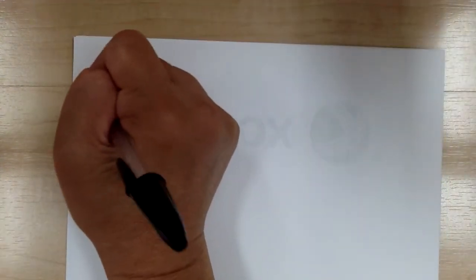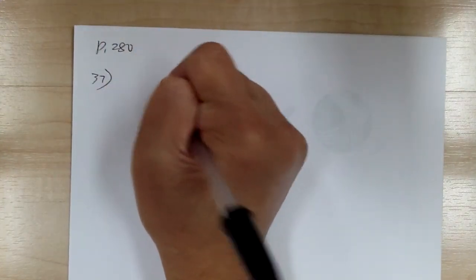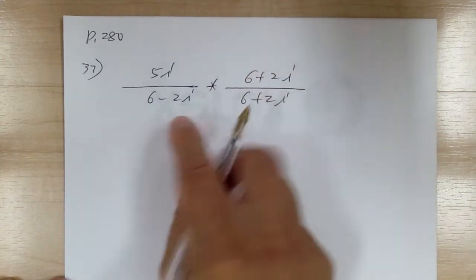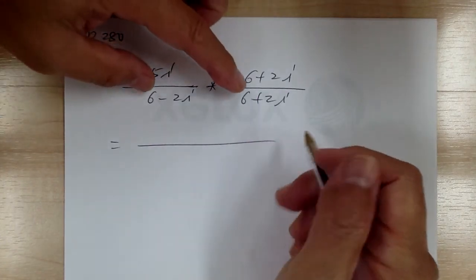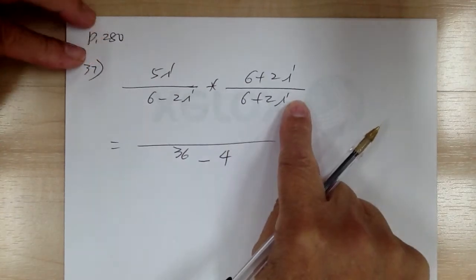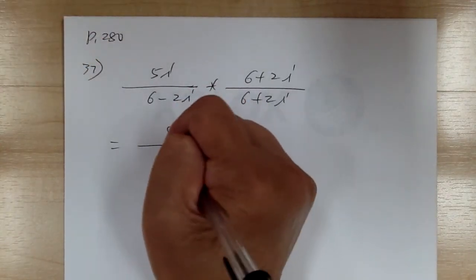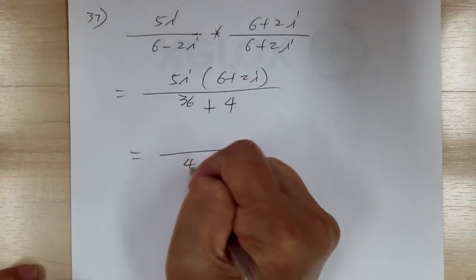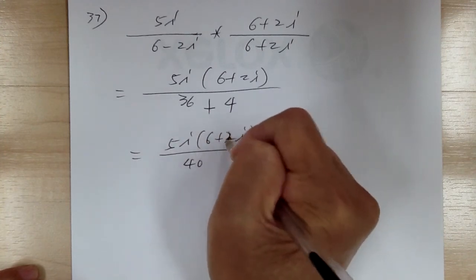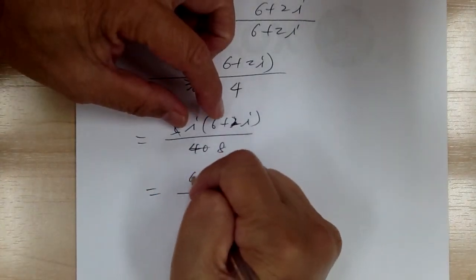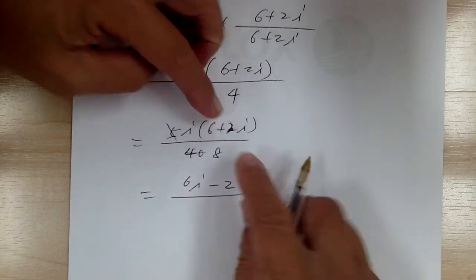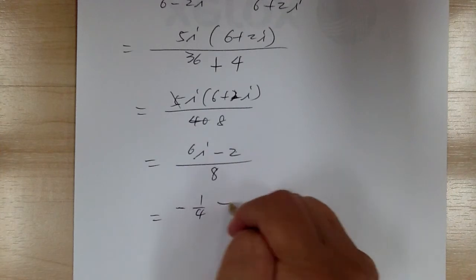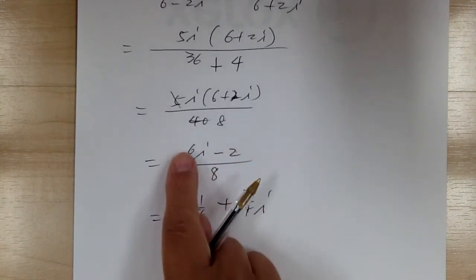Number 37: you got 5i over (6 minus 2i). Multiply by conjugate (6 plus 2i) over (6 plus 2i). The bottom gives 36, and i times i is negative 1, so minus 4 becomes plus 4, giving 40. Do not multiply out the top yet — see if you can cancel. You can cancel, leaving the top over 8. Multiply: 6i, and 2i times i is negative 1, so this becomes minus 2. Over 8: that equals negative 1 over 4 plus 3 over 4i.